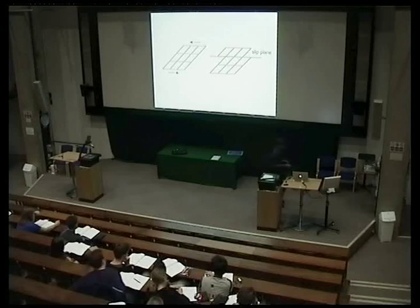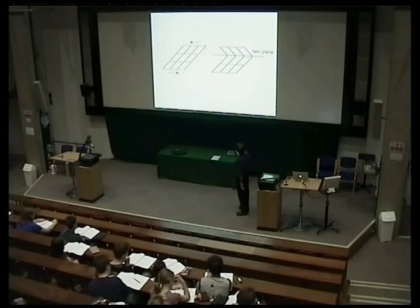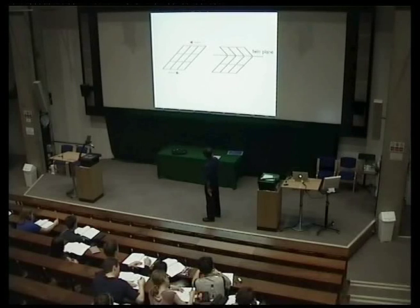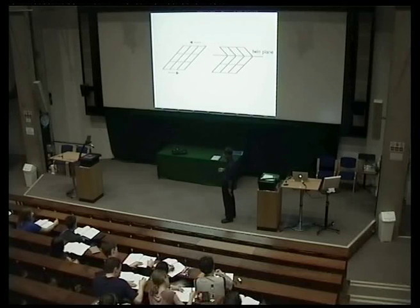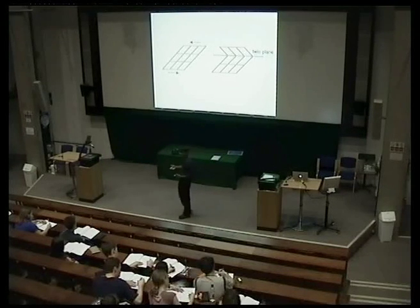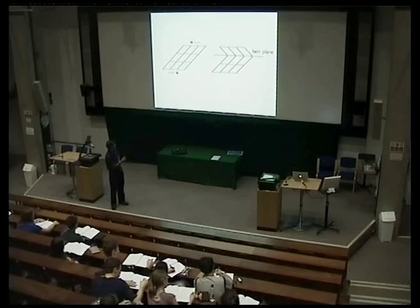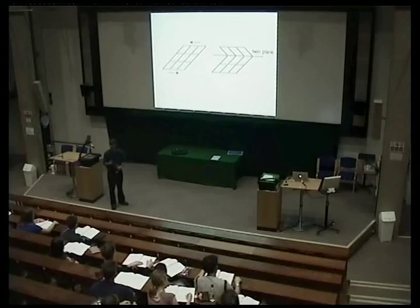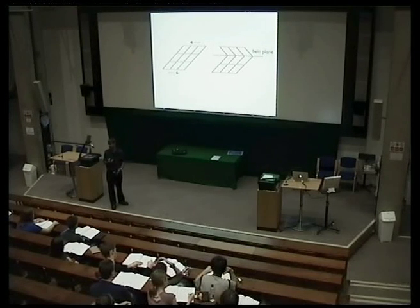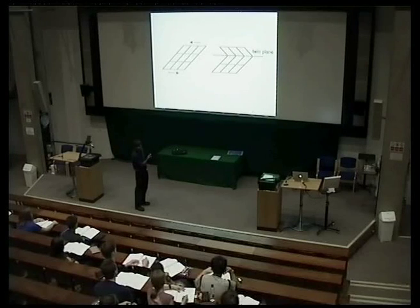This is the other kind of deformation you may not be familiar with, where instead of simply causing a slip step — translating one part of the crystal with respect to the other — you reorient the crystal such that this region becomes a reflection of the region underneath. This has exactly the same crystal structure as the bottom half, but it's reoriented by this deformation. We've created a twin, which if you reflect about the twin plane is in a mirror orientation. That's called mechanical twinning, and you can see it is effectively a shear.